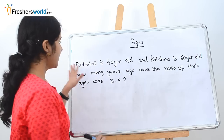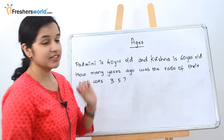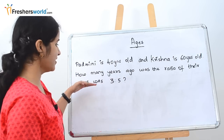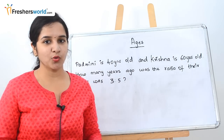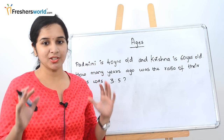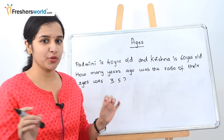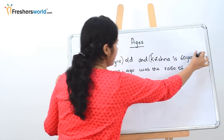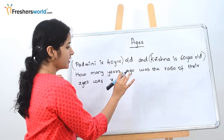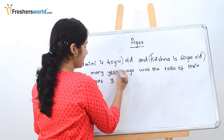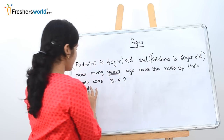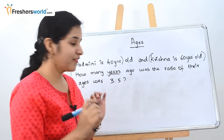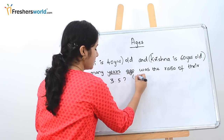The first question: Padmini is 40 years old and Krishna is 60 years old. How many years ago was the ratio of their ages 3 to 5? As I told you in Part 1, segregate the question into parts so it is easy to solve. Padmini is 40 years old, Krishna is 60 years old, and we have to find the number of years ago when the ratio was 3 to 5. The word 'ago' means we have to subtract.